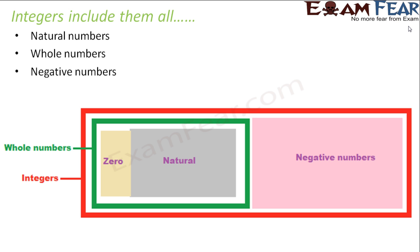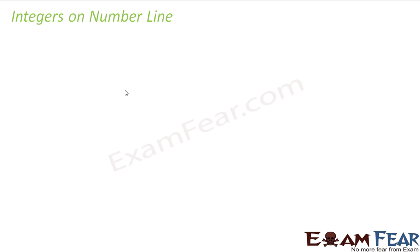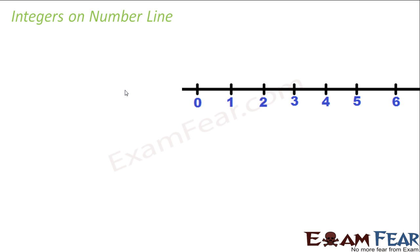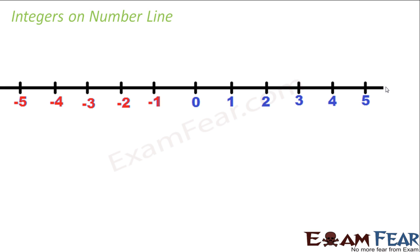So natural numbers, whole numbers, and negative numbers — they are all part of integers. Now how do we locate integers on a number line? As I said, as long as we knew only about natural numbers or whole numbers, the number line started with zero and then moved on till infinity. Now that we also know the negative numbers, it becomes something like this, where we have the negative numbers on the left-hand side of zero. So this is how the integers look on a number line.